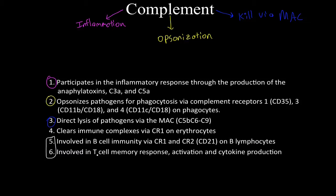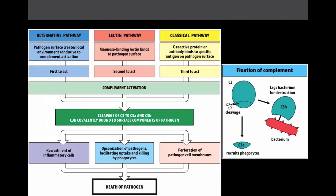Complement also plays a role in adaptive immunity — B cells have receptors for complement and it's involved in T cell memory responses. The goal of all three pathways — the alternative pathway, the lectin pathway, and the classical pathway — is to cleave C3 into C3 alpha and C3 beta. C3 beta tags pathogens such as bacteria, yeasts, or protozoa for destruction, ultimately leading to inflammation, opsonization, and membrane attack complex formation.